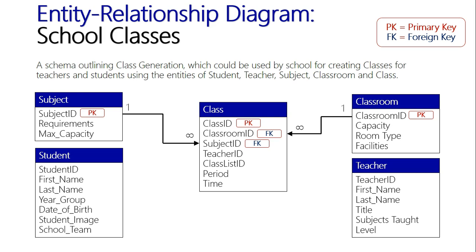Every specific class is given one room, but that room is used multiple times by the school. The same applies to the teacher — as we can see, the primary key connects with the teacher foreign key. One teacher is assigned to every class, but that one teacher will teach many classes, so that's another one-to-many relationship.